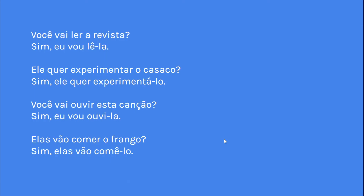These are some examples of adding the direct object pronoun to the infinitive, right? At the end of the infinitive. Por exemplo, você vai ler a revista — magazine. Sim, eu vou lê-la. Ele quer experimentar o casaco — that's jacket or coat. Sim, ele quer experimentá-lo. Você vai ouvir esta canção — song. Sim, eu vou ouvi-la. Elas vão comer o frango — frango is chicken. Sim, elas vão comê-lo.